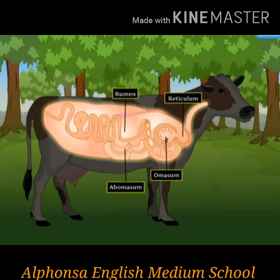When these animals are resting, they chew the cud — the partially digested food. After chewing, the food is passed to the third part of the stomach, the omasum, where digestion takes place by mixing with digestive juices. From the omasum, the food is passed to the fourth part of the stomach, the abomasum, and from there it is passed on to the next part of the digestive tract.